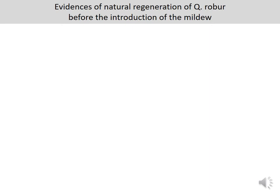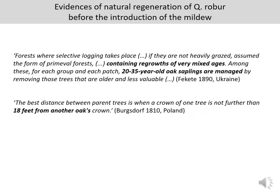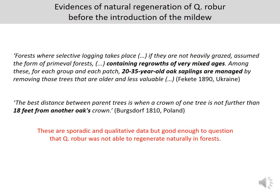Contradictions grew even stronger when we found evidence of natural regeneration of oak in the history of forestry literature — mainly in Hungarian, but also in Serbian, Romanian, and Polish literature. They describe natural regeneration of oak in stands managed by selective logging at the lowland. These are sporadic and qualitative data, but they are good enough to question whether Quercus robur was or wasn't able to regenerate naturally in the past, and whether light or moisture is the main cause. Finally, we decided to write a perspective paper about this.